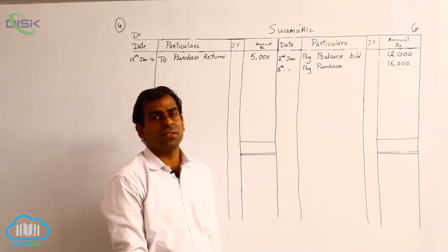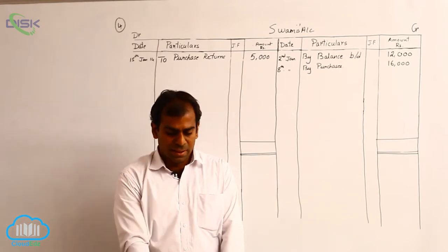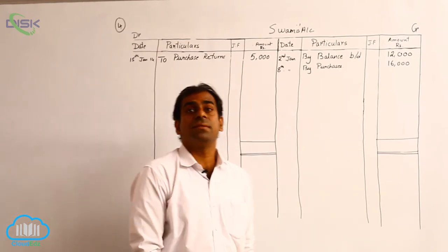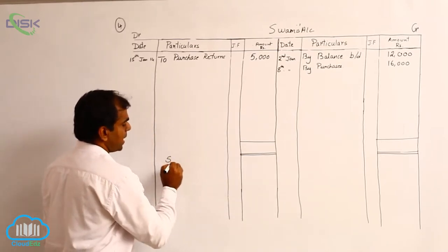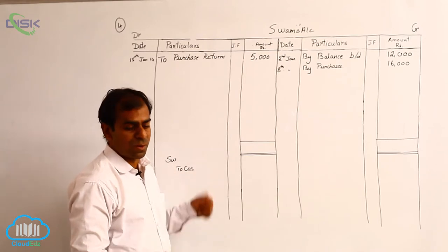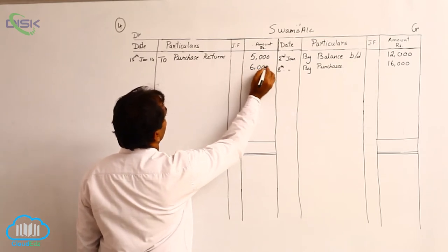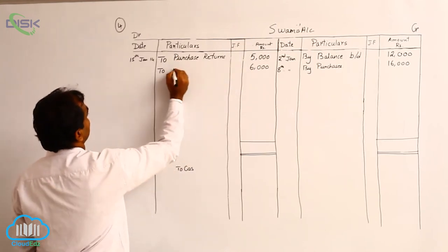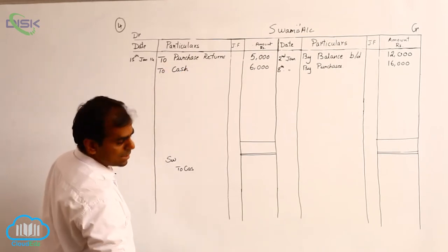The next transaction is on 20th January: cash paid to Swami, rupees 6,000. We paid cash to Swami, meaning Swami is the receiver. The journal entry is: Swami to cash. As per the journal entry, we are debiting Swami's account with rupees 6,000, so we write 6,000 in the amount column. The constant 'to' is used in particulars on the debit side. The reason for debiting Swami's account is we are paying cash, so we write 'cash' in particulars. The date is 20th January.